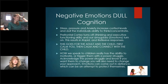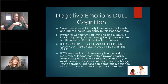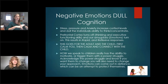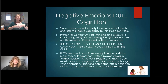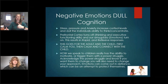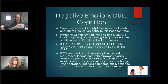Negative emotions dull cognition. Executive functioning skills live in the frontal lobe while emotions are processed in the back of the brain — the amygdala. Stress and anxiety increase cortisol levels, which dulls the individual's ability to think or concentrate. If a kid is in class telling themselves 'I'm so stupid, I can't do this,' cortisol is dumping and they can't get started on the task. We need to help them regulate their nervous system — but to do that, we need to be calm first, connect with the child, and validate their feelings.